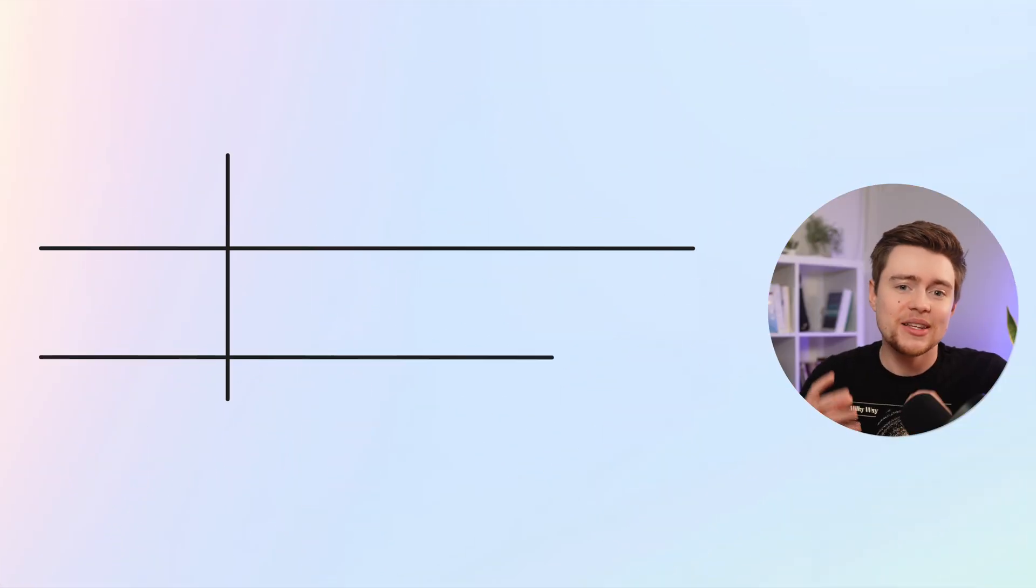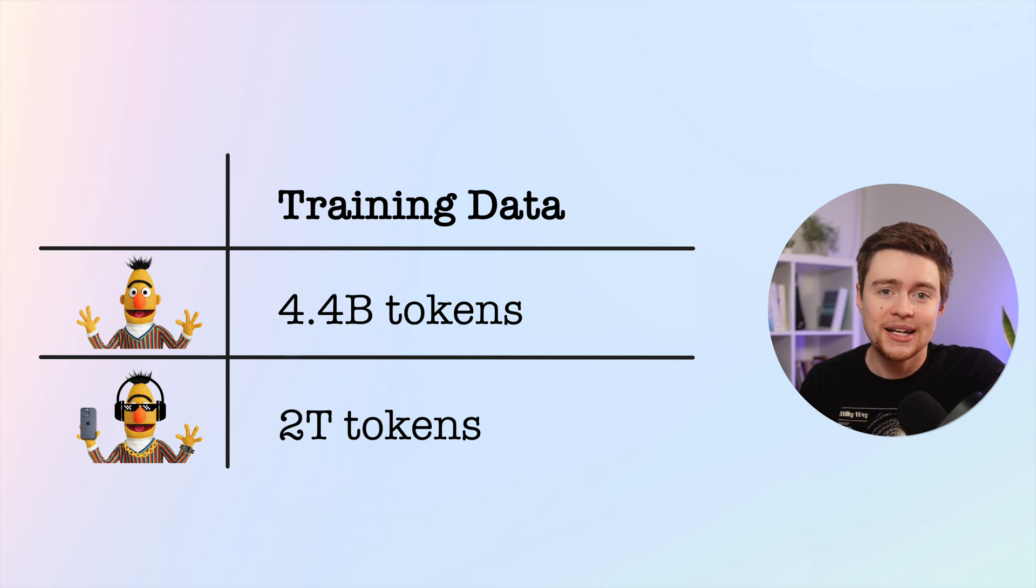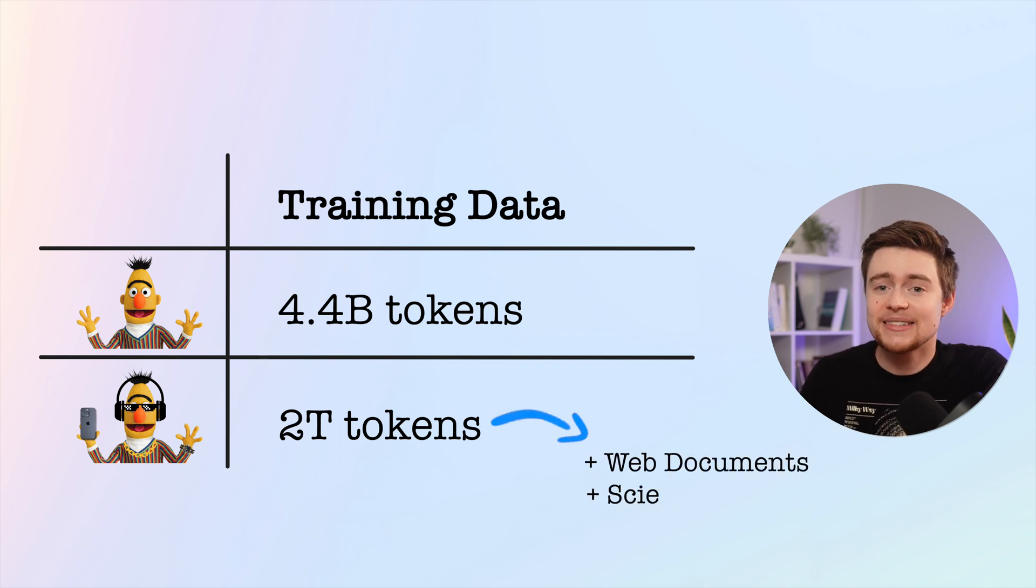Let's start with the training data. Modern BERT was trained on 2 trillion tokens, which is about 500 times more than the data used for training BERT. That on its own should give us big improvements, but they also focused on data diversity, and the new training data now includes web documents, scientific literature, and also code.